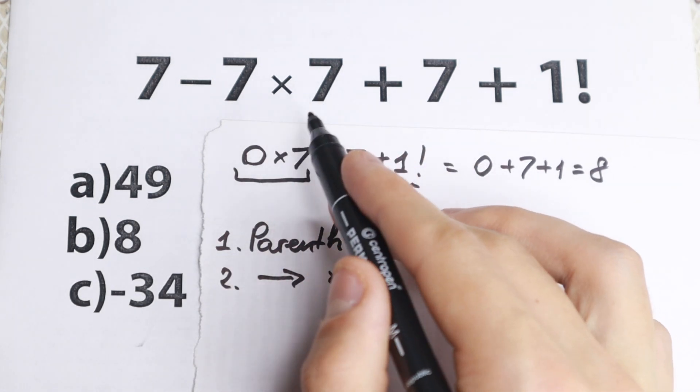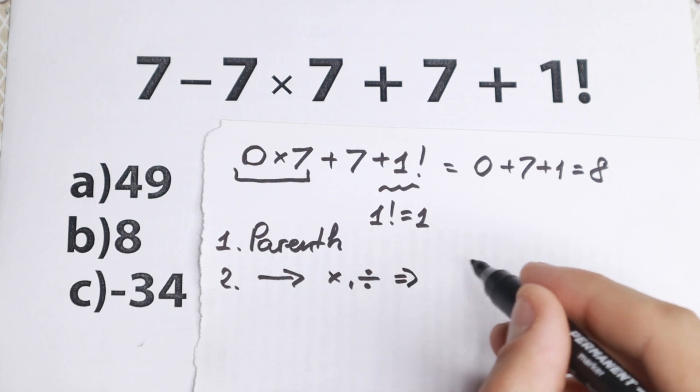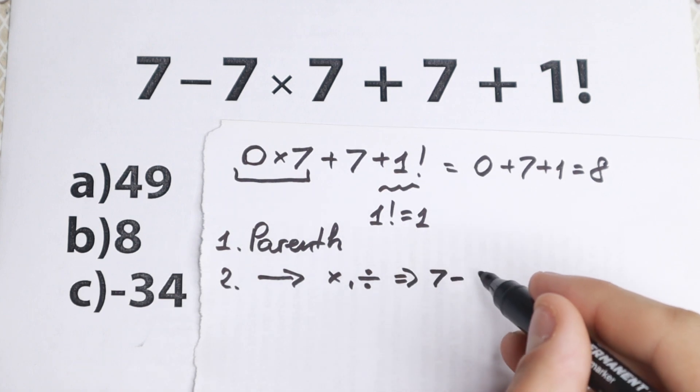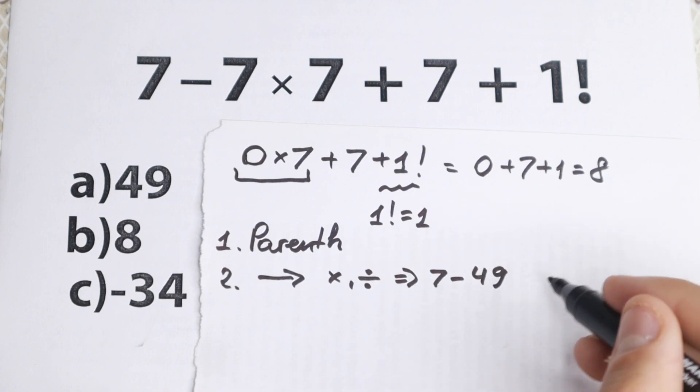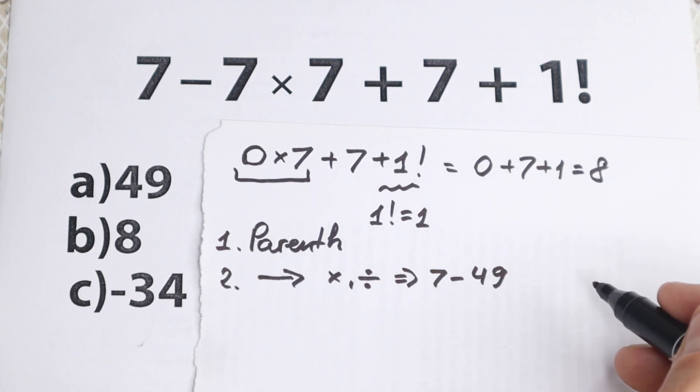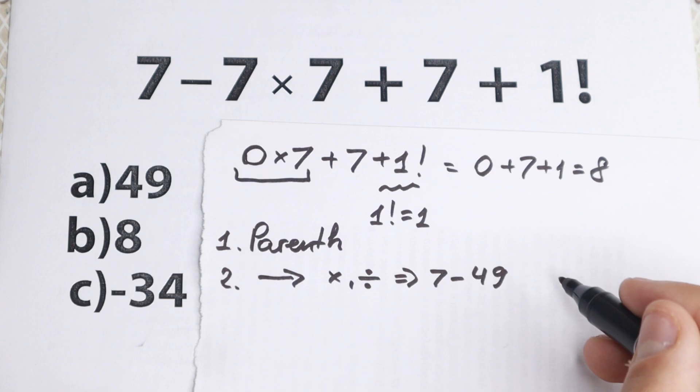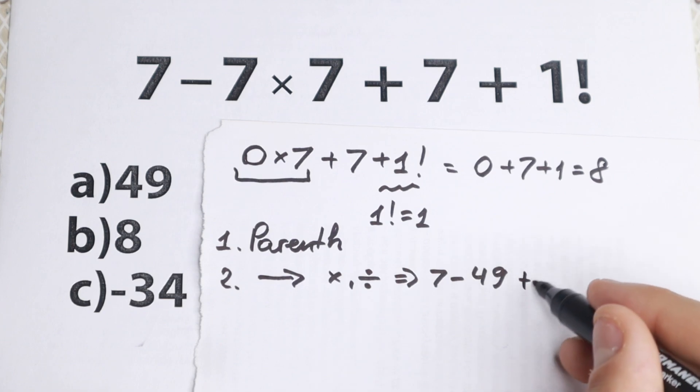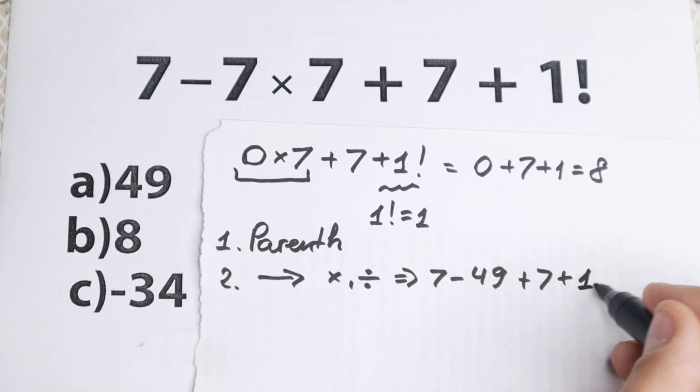So starting with this one. We have multiplication, so we need to start with this. As a result we will have 7 minus 7 times 7 equal to 49. So as you can see we have a different answer. 7 minus 49 and of course plus 7 and plus 1, because right now we know that 1 factorial equal to 1.